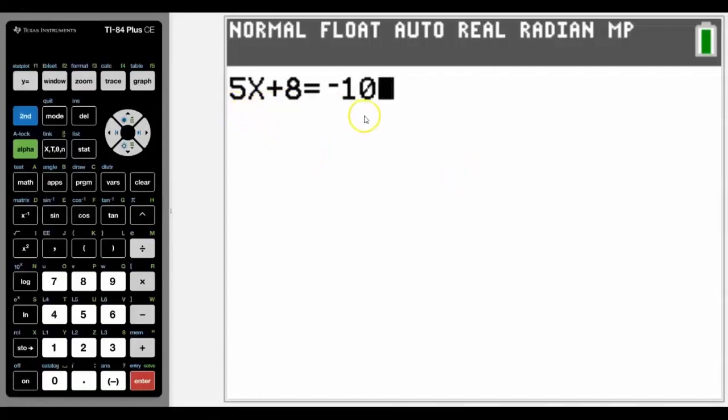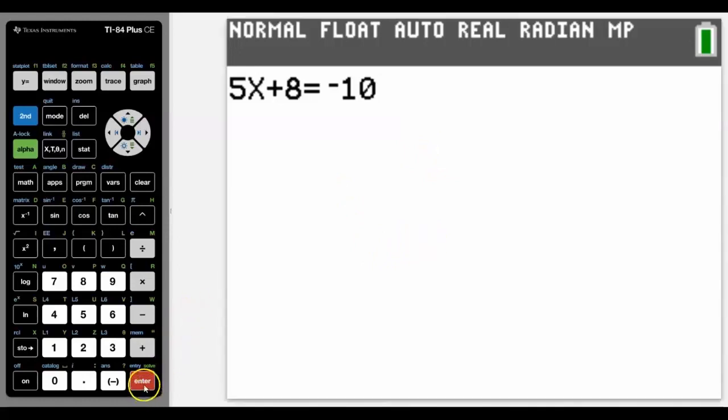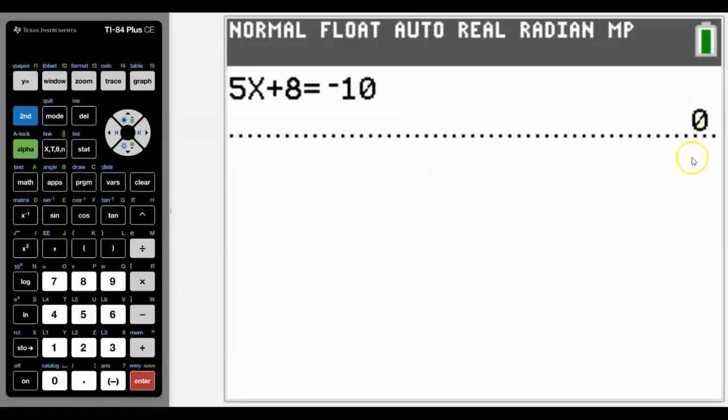So if we are trying to solve this equation 5x+8=-10 on the TI-84 plus CE, we wouldn't actually get an answer. The reason for that is it doesn't have CAS capability, that's computer algebraic systems. In fact, if I press enter on here it gives us an answer of zero.